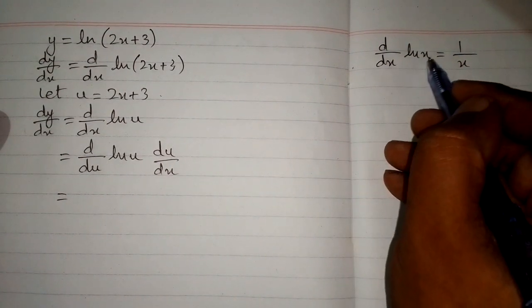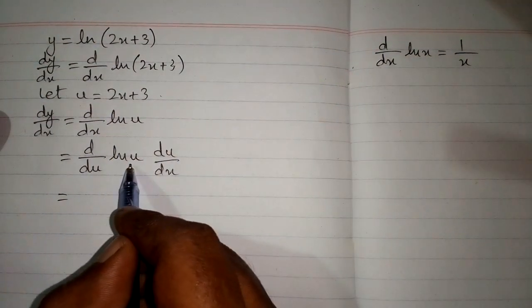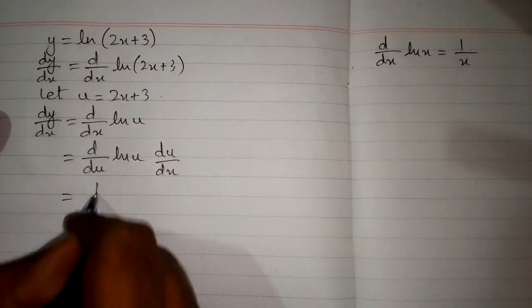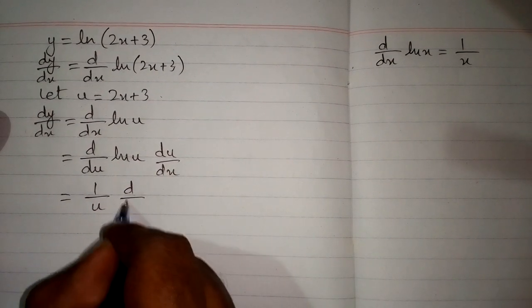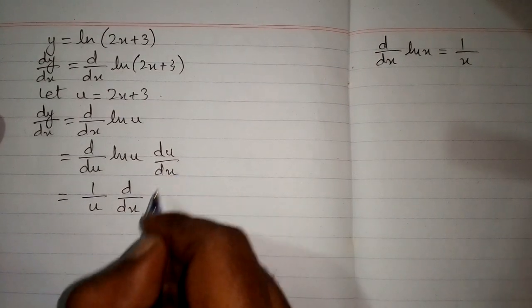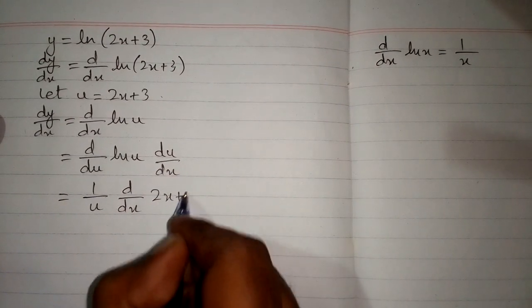Now the derivative of ln of x is 1 upon x, so the derivative of ln of u is 1 upon u, multiplied by the derivative of u, and u is 2x plus 3.